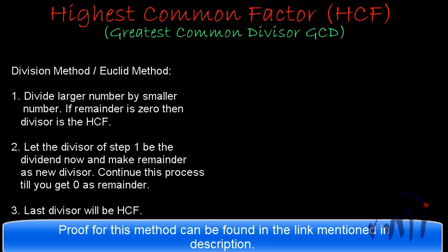So as you can see I have already noted down the procedure to find the GCD or HCF using division method which says divide the larger number by smaller number. If remainder is 0 then divisor is HCF. Otherwise let the divisor of step 1 be the dividend now and make the remainder as new divisor. Continue this process till you get remainder as 0 and the last divisor will be the HCF. So we will understand this method or procedure by solving a problem.